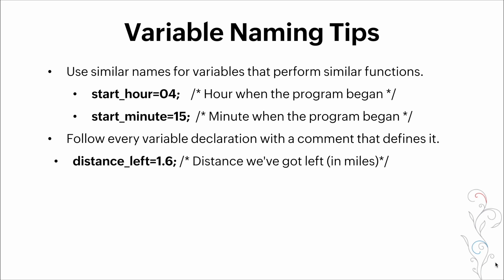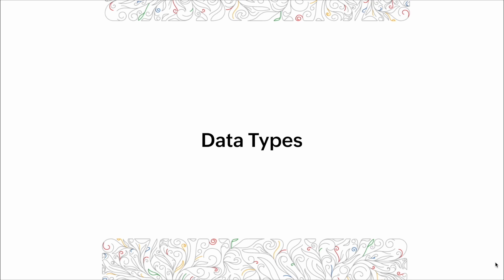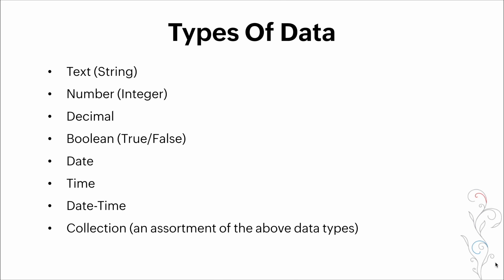Follow every variable declaration with a comment that defines it. And let's talk about data types. These are some of the data types that are all available to us in Deluge. We have text or string, numbers or integers, decimal data types, boolean data types which are true and false, we have date variable types, time data types, date time, and collections which are an assortment of the above data types.